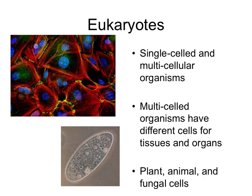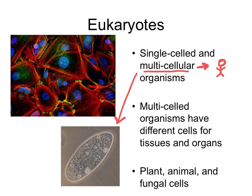Eukaryotes can be either single-celled or multi-celled organisms. This differs from prokaryotes, which are exclusively single-celled. Eukaryotes can be single-celled organisms like a paramecium, or multicellular organisms like humans. Multicellular organisms have different cells for different tissues — the cells in your skin, for example, look different from the cells in your nerves or muscles.